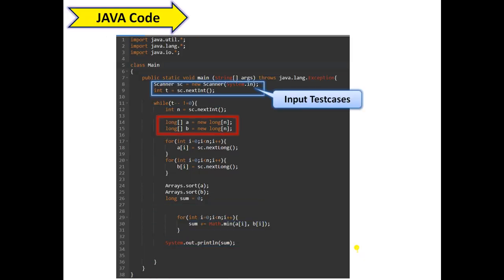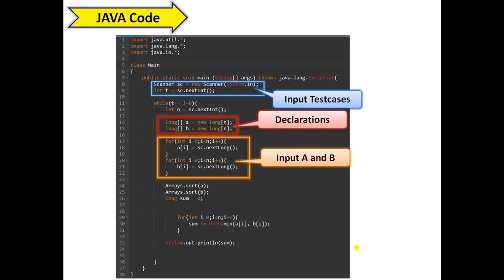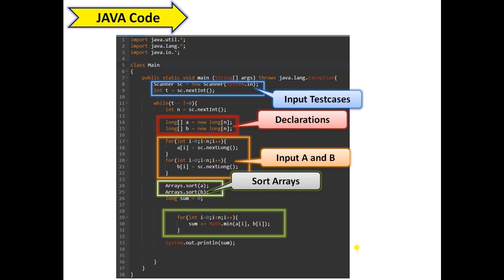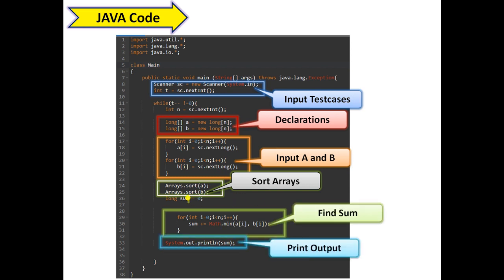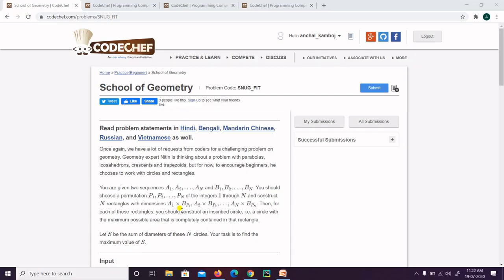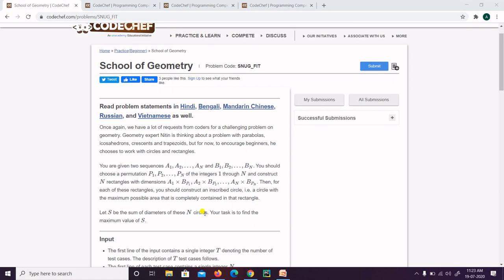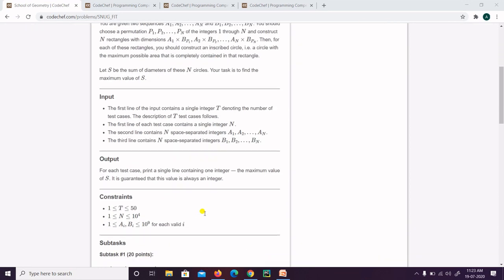For the Java code: take input for test cases, declare arrays using new to allocate memory, input a and b, sort them using the Arrays.sort function, find the minimum of two values using Math.min and add to sum, and finally print. Note that in Java we use long for the data type, just as we used long long in C++.